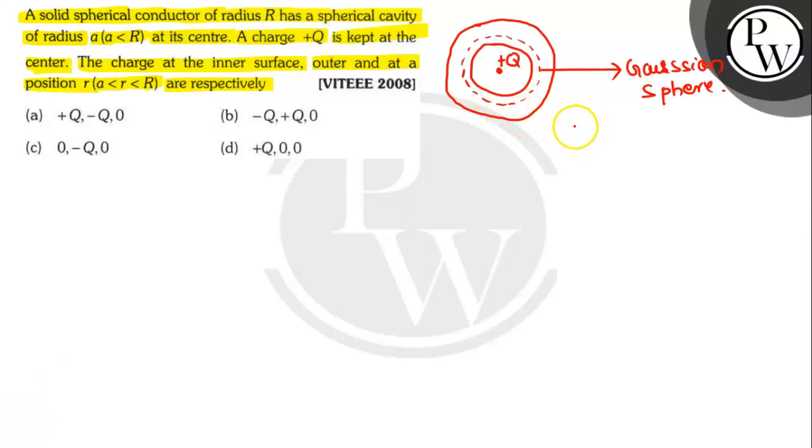Consider a Gaussian sphere of radius just including the inner surface of the sphere. Since the surface is inside the conducting region, E vector equals 0 vector. Thus, flux through the Gaussian surface is 0. Using Gauss law, integration of E dot ds equals Q enclosed divided by epsilon 0.